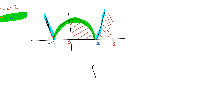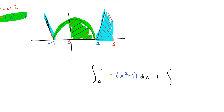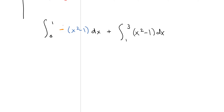From 0 to 1, I set up the integral from 0 to 1. You have to ask: which case applies? From 0 to 1 (the green region), this is Case 2, so the equation is negative bracket (x squared minus 1) dx. Plus, for the blue region from 1 to 3, that's Case 1, which is simply x squared minus 1 dx. I recommend distributing the minus sign right away, giving you negative x squared plus 1 for the first integral.